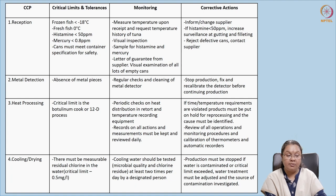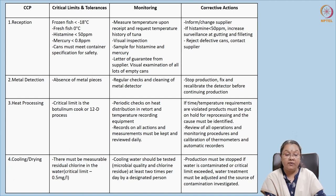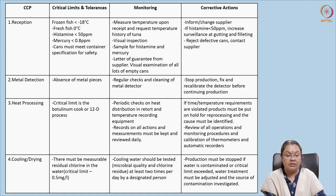If there is non-compliance, corrective actions must be taken. If the problem is with the can, the supplier must be immediately informed or the can must be changed. If the histamine level is above 50 ppm, we must see if gutting or any preventive measure can bring it down; if it is too high, the product must be rejected. Defective cans are rejected and suppliers are informed of the defects.